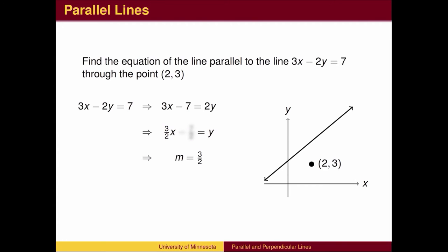we get y equals 3 halves x minus some number. It doesn't really matter what that number is. We know the slope is 3 halves from the slope-intercept form. Using the slope 3 halves and the given point, we can then use the point-slope form of a line to find the answer.